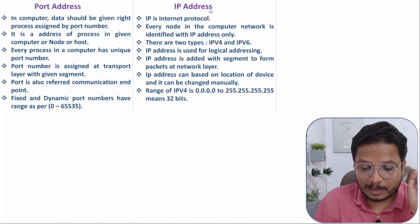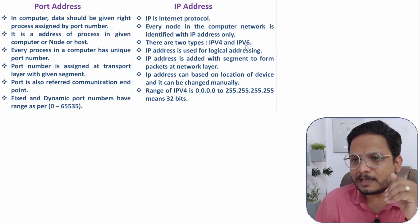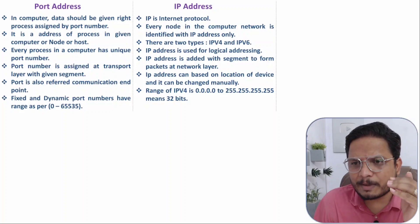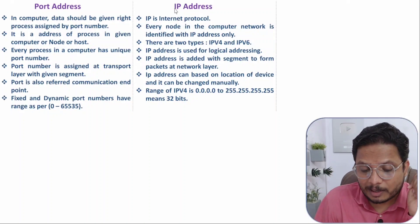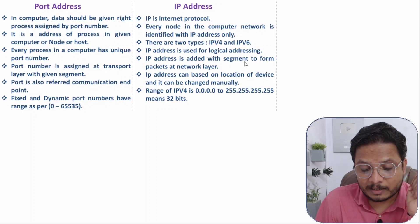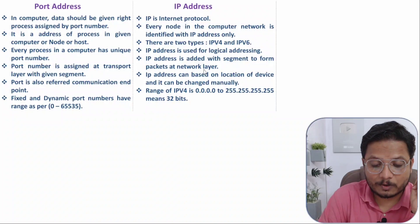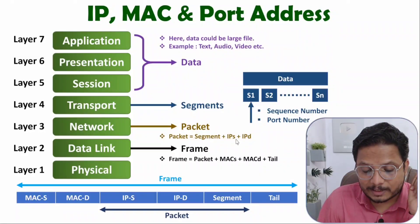Now let's see how IP address works. IP means Internet Protocol. Every node inside a computer network is identified with an IP address. There can be two types: IPv4 and IPv6. We commonly use IPv4 in TCP/IP protocol. IPv4 provides logical addressing. IP address is added with a segment to form packets at the network layer — by adding source and destination IP to a segment, we form a packet. So IP addresses are added at the network layer.